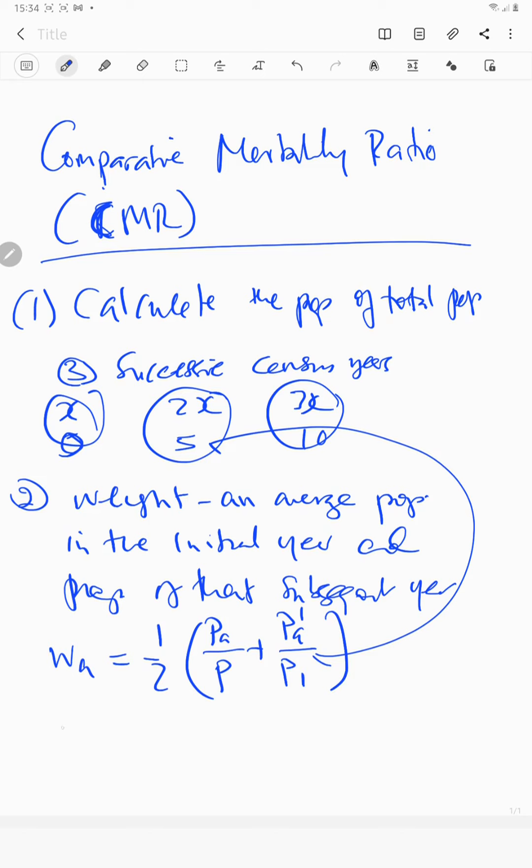Then the next interval, for the weight for year 2, is half multiplied by pa over p plus population 2 over population 2. So in this case, you have the weights for the two populations.